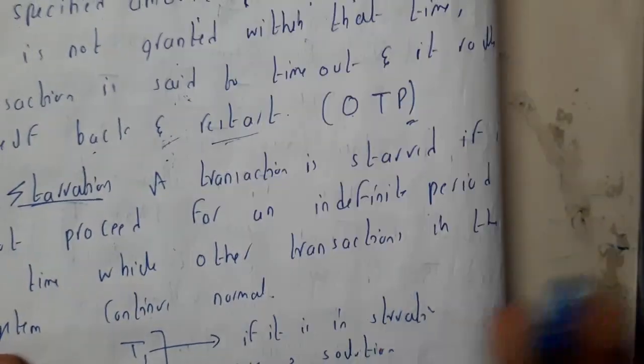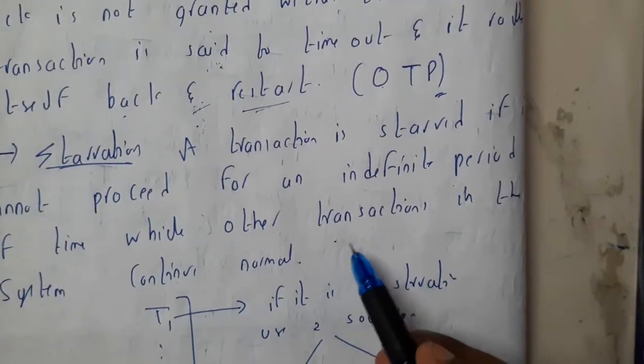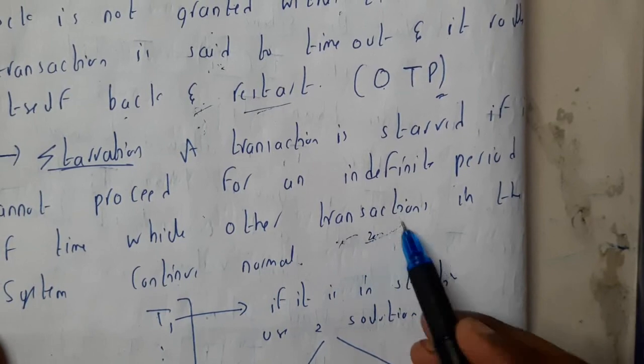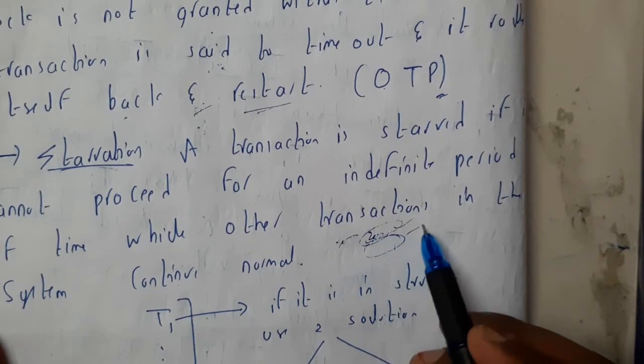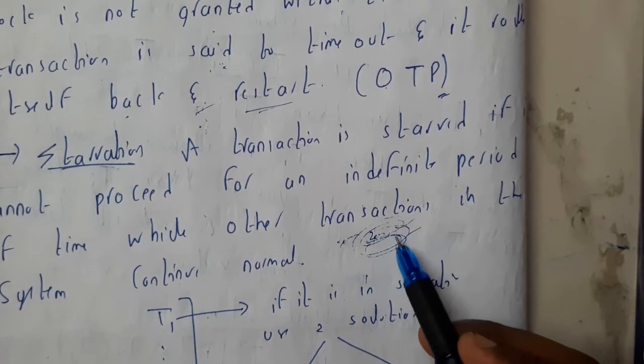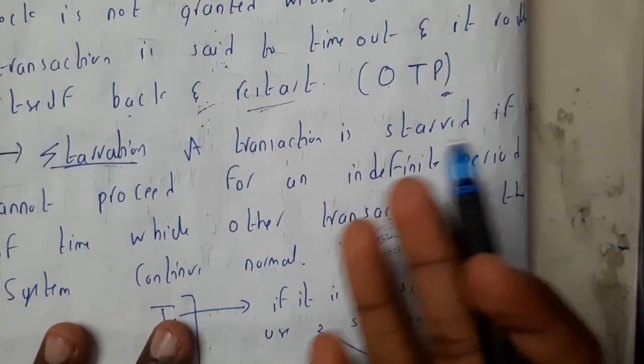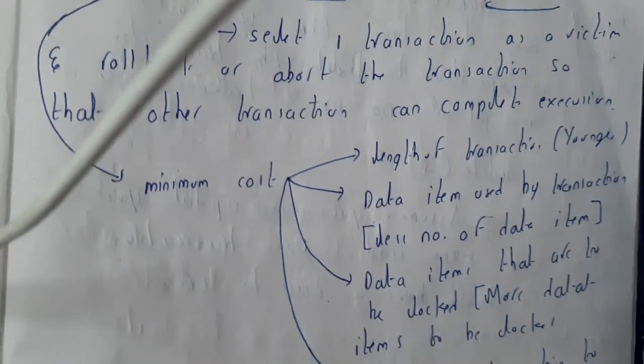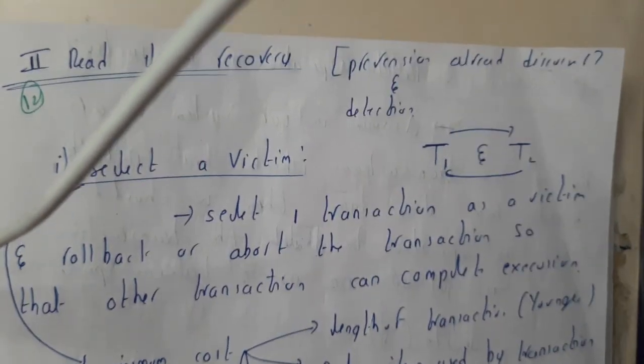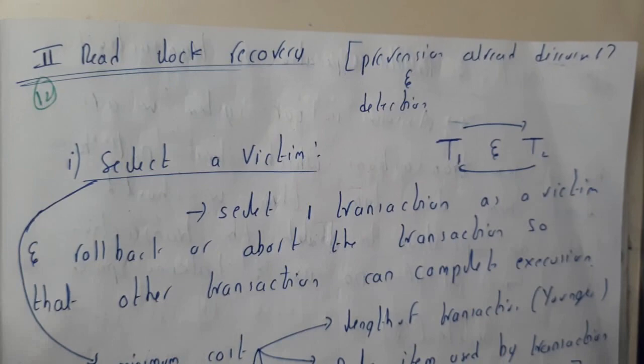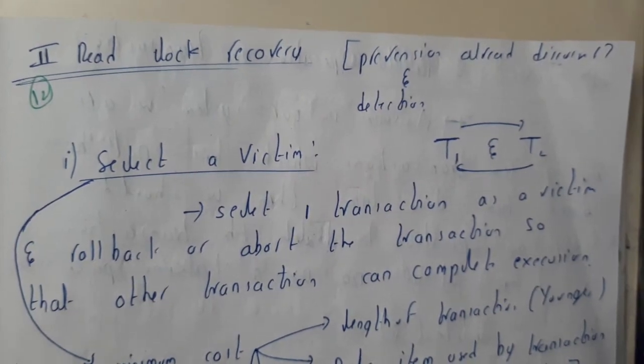I hope everyone got at least a small idea on deadlock prevention. We already have the 2PL method, and in graphs we have tree protocol solutions for prevention. We are also using timestamp and timeout-based schemes. In the next tutorial, we will be going through deadlock recovery. Thank you.